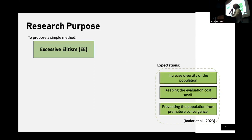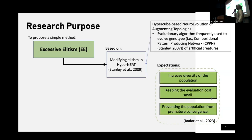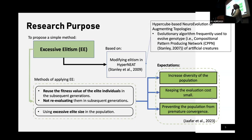We modify elitism in hyperneat, which is the evolutionary algorithm used to evolve the genotype of artificial creatures. How we apply this method is by succeeding and reusing the fitness values of the elite individuals in subsequent generations. And this method can be used to reduce the evaluation costs if the elite size in the population is in excess.